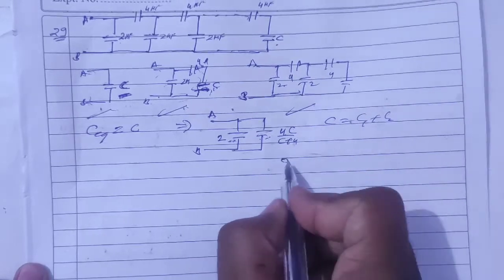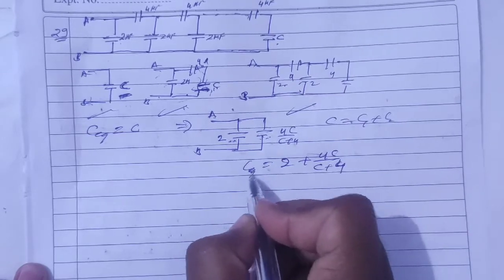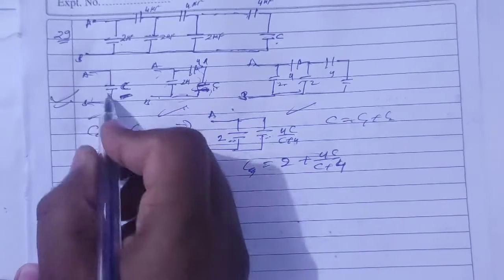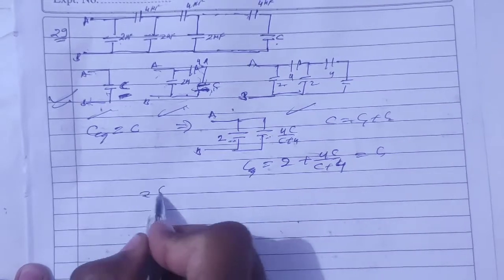C equivalent is 2 plus 4C divided by C plus 4. This is C equivalent, and C equivalent here we can see is equal to C. Now solve it.